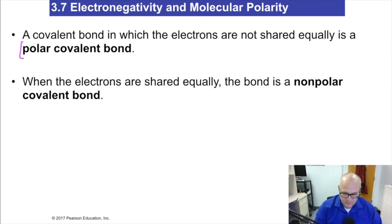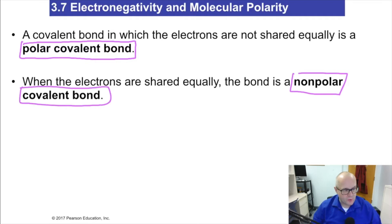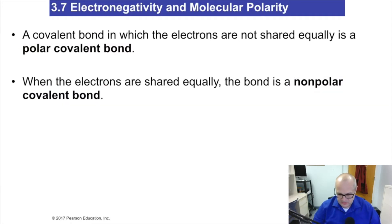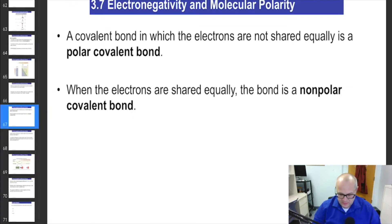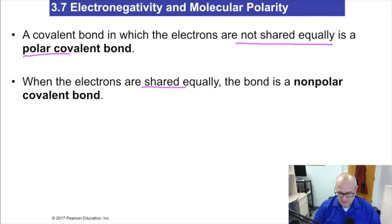There are two things you need to learn here: polar covalent bond and nonpolar covalent bond — both are equally important. A covalent bond in which the electrons are not shared equally is called polar covalent. When electrons are shared more or less equally, that's called nonpolar covalent.